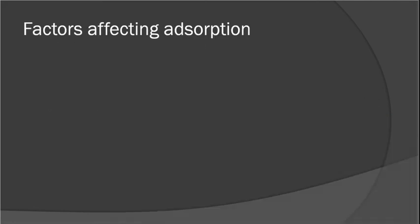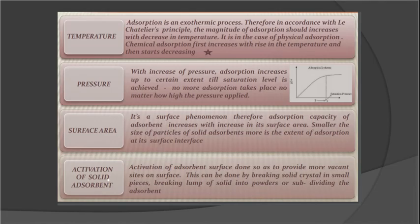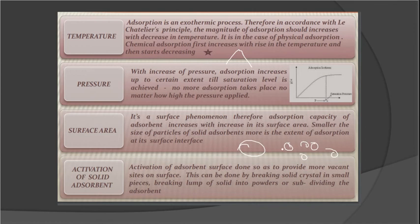Now let us see what are the factors affecting adsorption: temperature, pressure, surface area, and activation of the solid adsorbent. For temperature — in physical adsorption, the magnitude of adsorption increases with decrease in temperature; in chemical adsorption, it first increases and then decreases. For pressure, the magnitude of adsorption increases and then reaches a saturation level. For surface area, as surface area increases, the magnitude of adsorption increases. If you break a bulk adsorbent into multiple smaller pieces, the surface area increases and deposition increases — this is the principle of activation of the solid adsorbent.